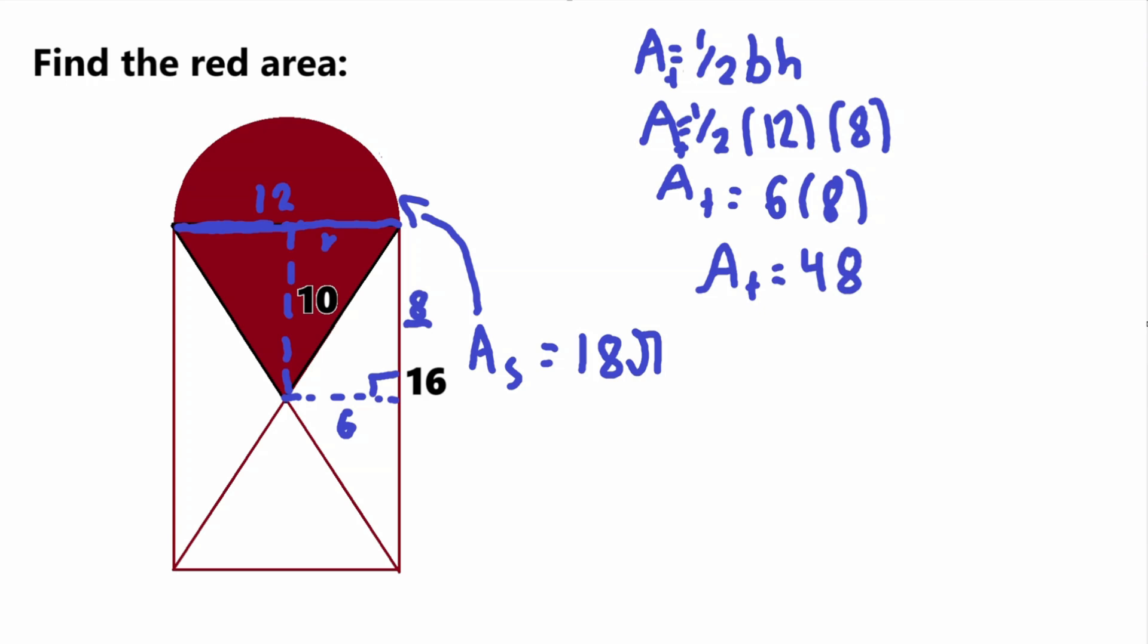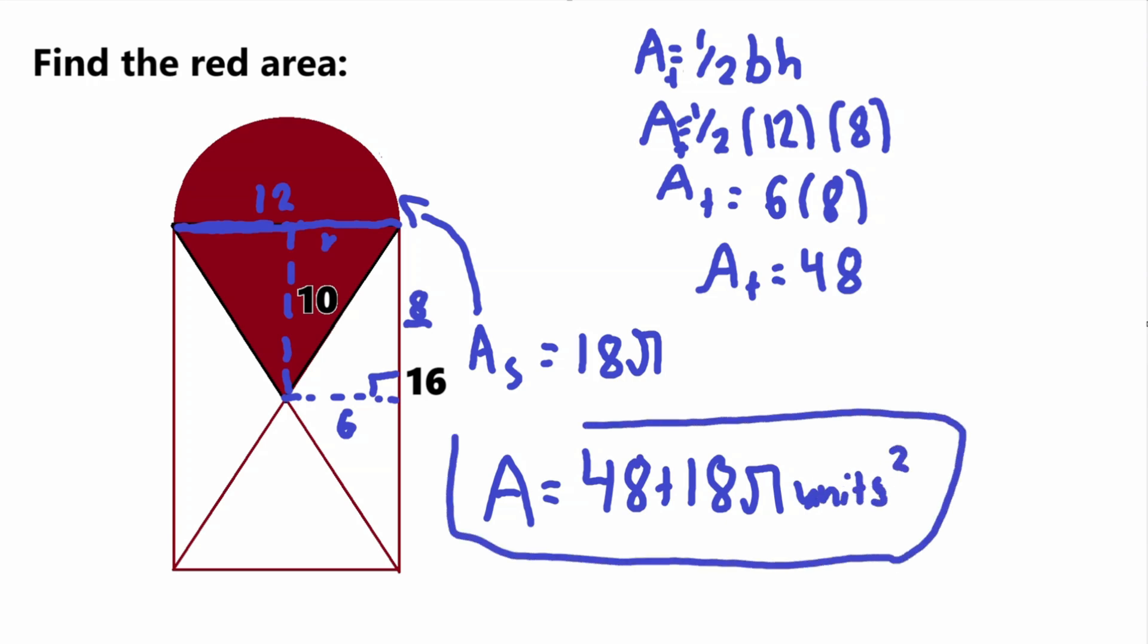So now our final answer of the total area of this red area is going to be equal to 48 plus 18π. If you want to use a calculator, you can use that to get an exact answer. But I'm just going to keep it simplified, or keep it written like this. And we don't have units, but since it's area, it's going to be square, so I'll just put units squared, because area means squared. And that is our final answer.